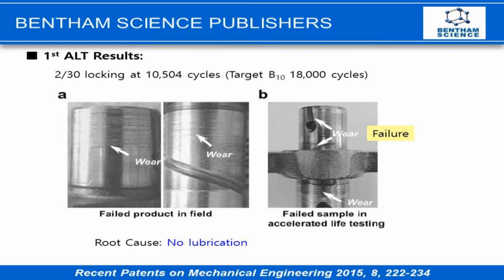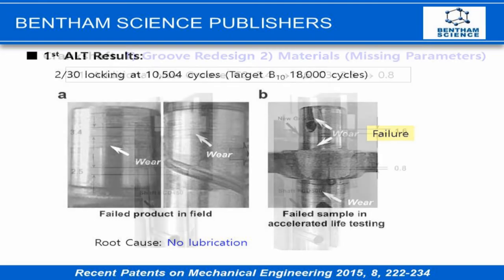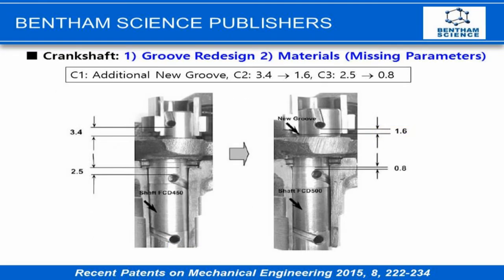In the first ALT, we found two unlocked samples at 10,000 cycles. The root cause was no lubrication. The modified design included modification of the oil lubrication region, increasing starting RPM from 1800 to 200 changing, and crankshaft material change.